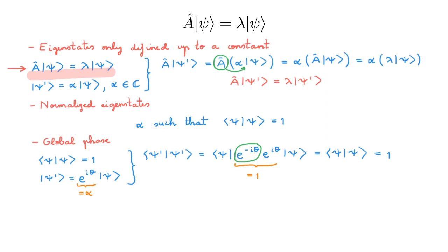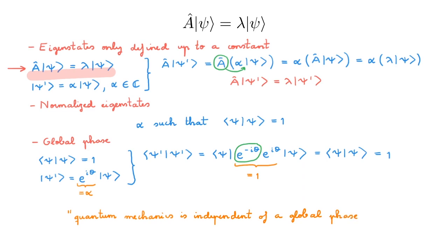So what can we say about this extra degree of freedom? Physical systems have well-defined properties, so this freedom strongly suggests that whatever quantum mechanics tells us about nature, it will be independent of multiplying a ket by a global phase. Once you finish watching all the videos on the postulates of quantum mechanics, you will see how this is indeed true.